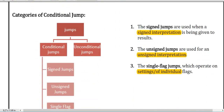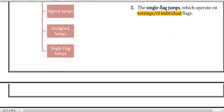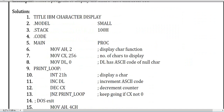This is the diagram and criteria of conditional jumps. Jumps are of two types: unconditional jump and conditional jump. Conditional jumps have three sections: signed jump, unsigned jump, and single flag jump. If a signed condition has occurred then a signed jump happens; if there is an unsigned condition then an unsigned jump occurs; and single flag jumps operate on the settings of individual flags.